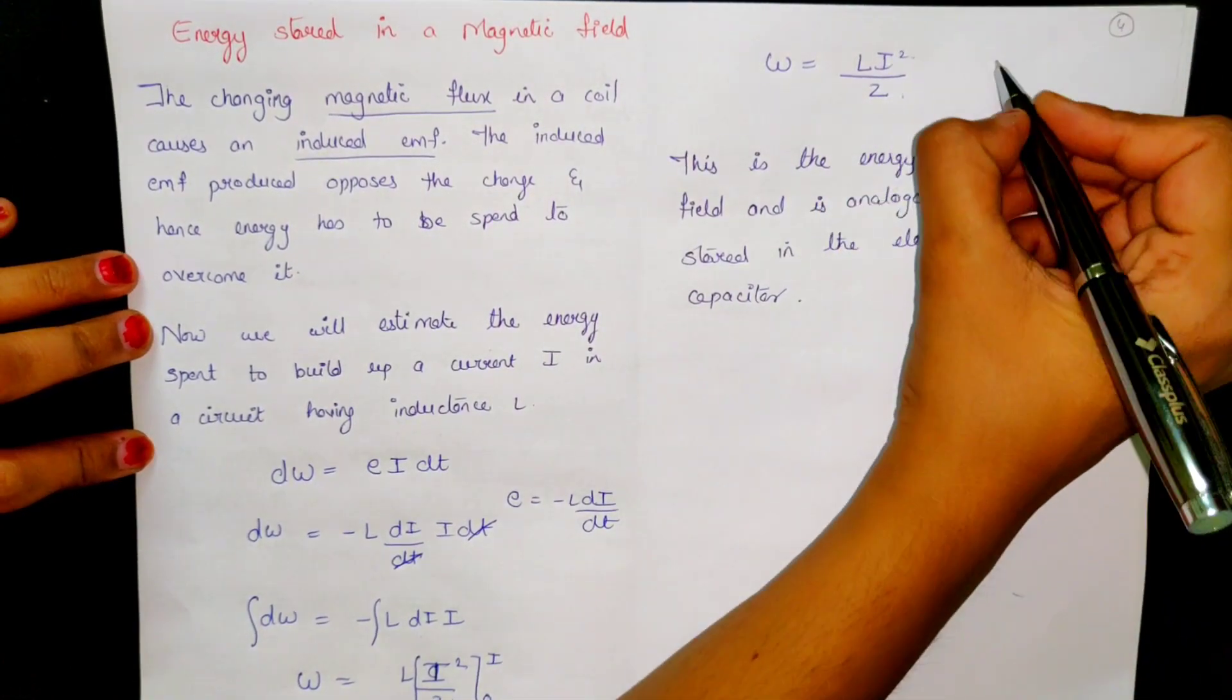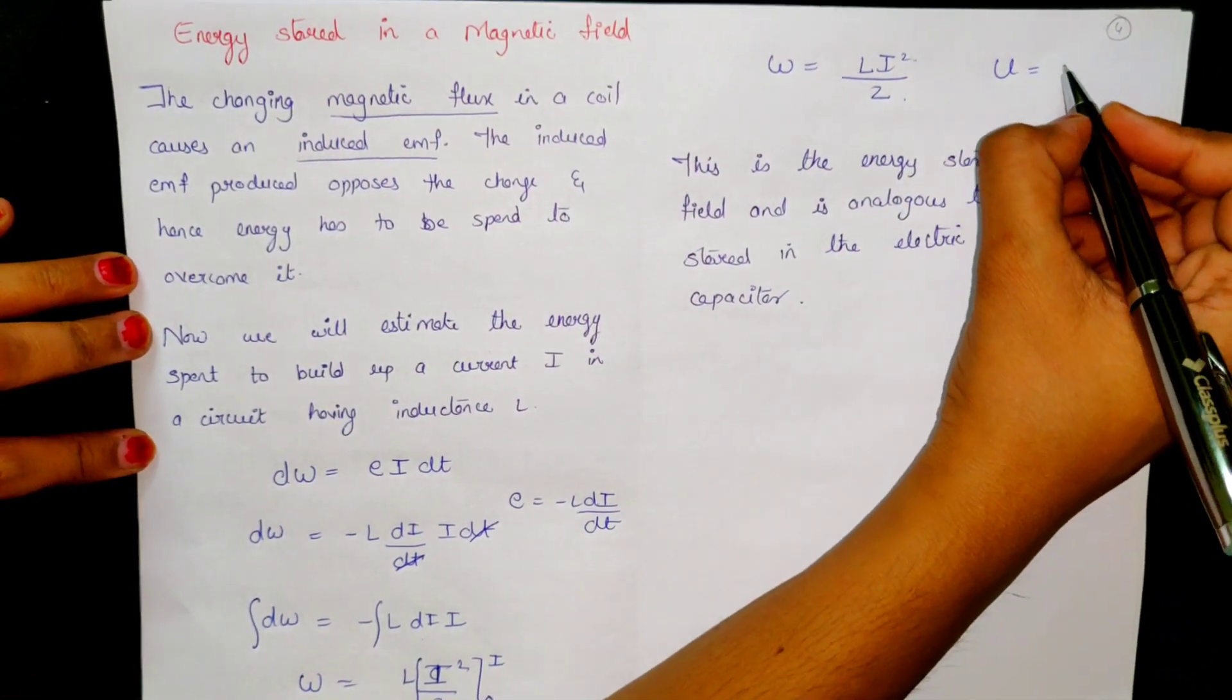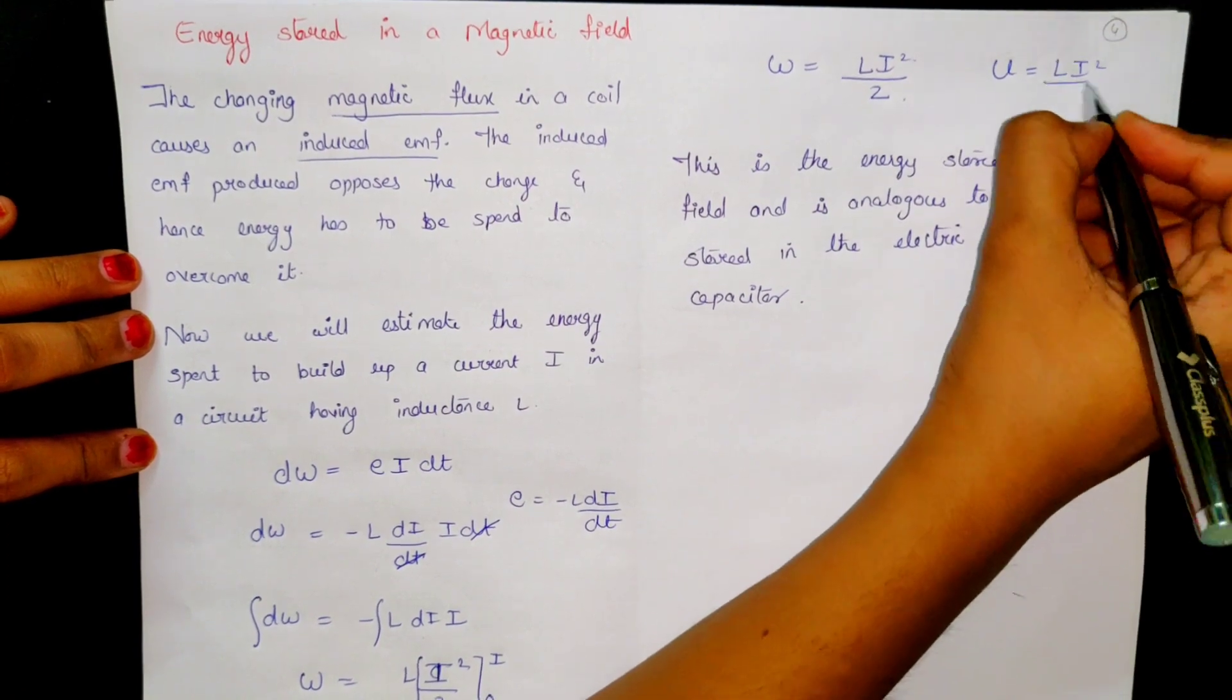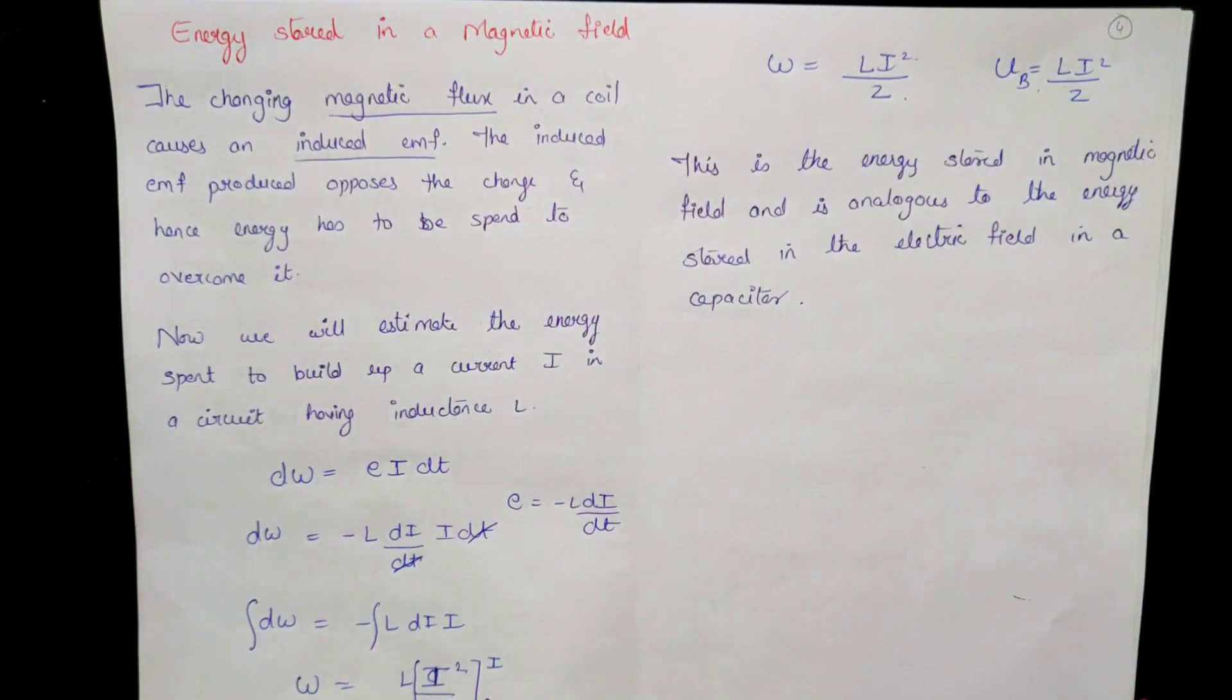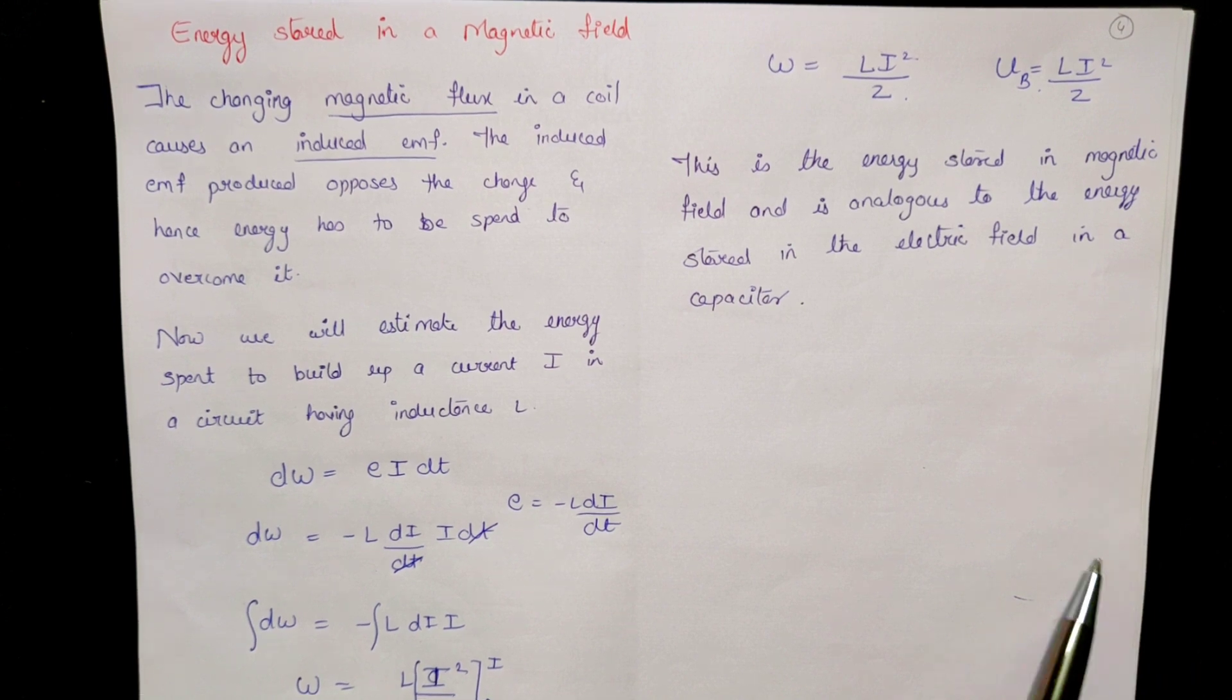This is the work done. This is stored in the form of energy. So this is L i square by 2. This is the magnetic energy. So this is U_b.